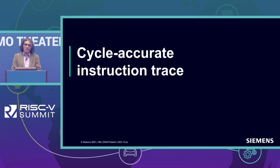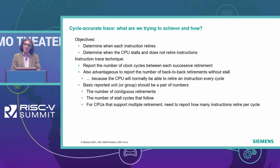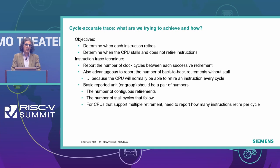One of the important aspects of trace is to get not just the instruction trace itself, but to get a cycle-accurate representation of the program trace. The objective is to determine the time when each instruction retires, and equally importantly, to understand when and for how long the CPU stalled and did not retire instructions — that can give a lot of insight into system behavior.